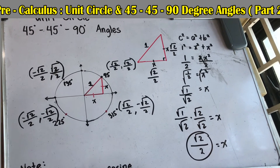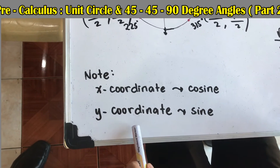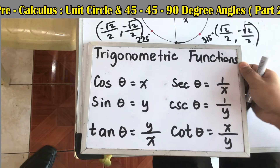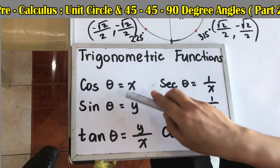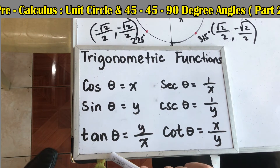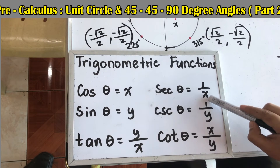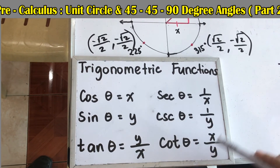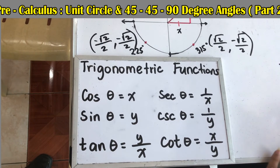Recall that the x-coordinate indicates cosine and the y-coordinate indicates sine. The trig functions are: cosine θ = x, sine θ = y, tangent θ = y/x. The reciprocals are: secant = 1/x, cosecant = 1/y, and cotangent = x/y.